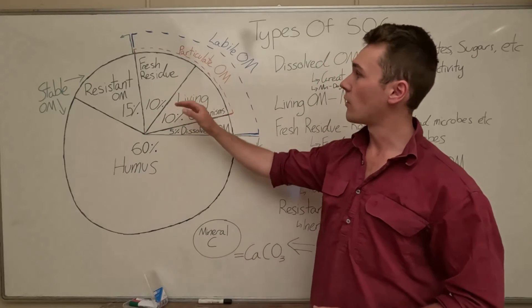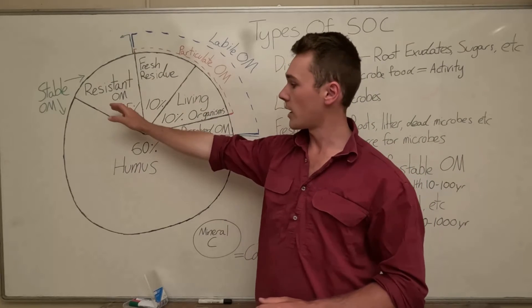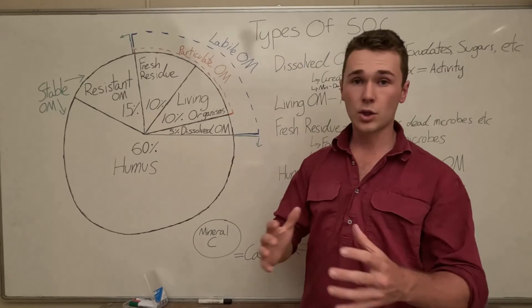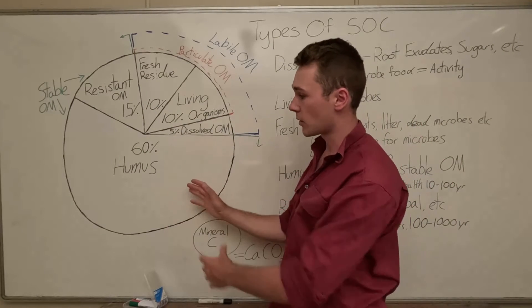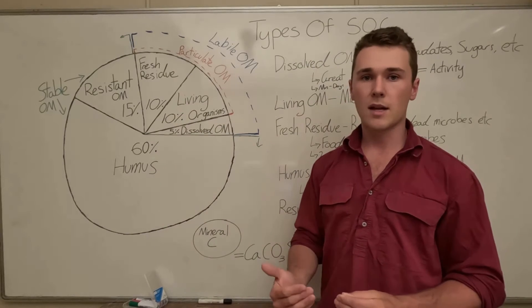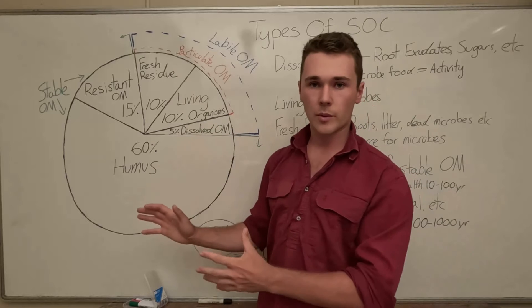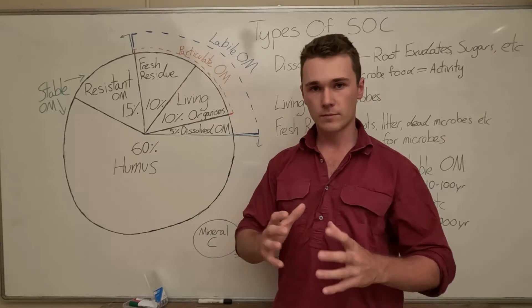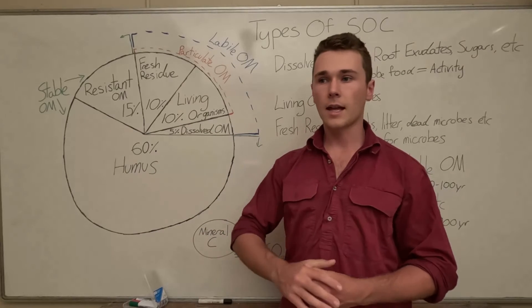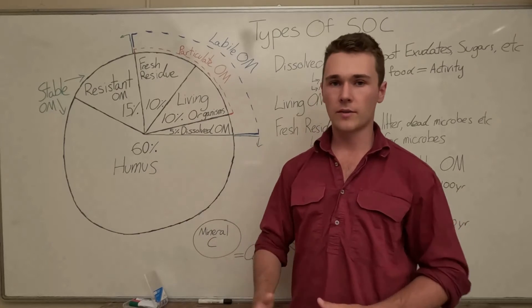On the other side of labile carbon we have our stable organic matter this includes resistant organic matter and humus. Now humus makes up the biggest component of our soil 60 percent it's a massive component and it's very difficult to explain what humus is simply because there is no chemical formula which describes humus. It's a very complex polymer of carbons pieced together by different microbes.